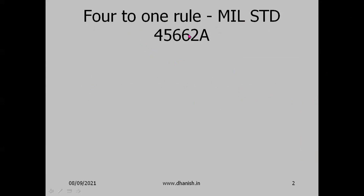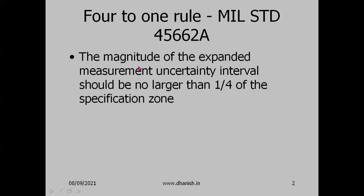One of the first rules to discuss the issue of measurement uncertainty was the MIL standard — military standard 45662A of the United States, developed during the Second World War. The rule states that the magnitude of the expanded measurement uncertainty should be no larger than one-fourth of the specification zone, which is the allowed limits as per the designer. The specification zone is defined by the upper specification limit (USL) and lower specification limit (LSL).